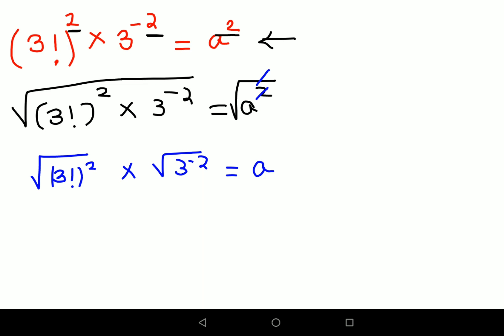And now you will also realize that the roots and the squares are cancelling, so I'm just left with what? 3 factorial into 3 raised to minus 1. Okay, we had minus 2, so now it becomes just minus 1 equals to a.